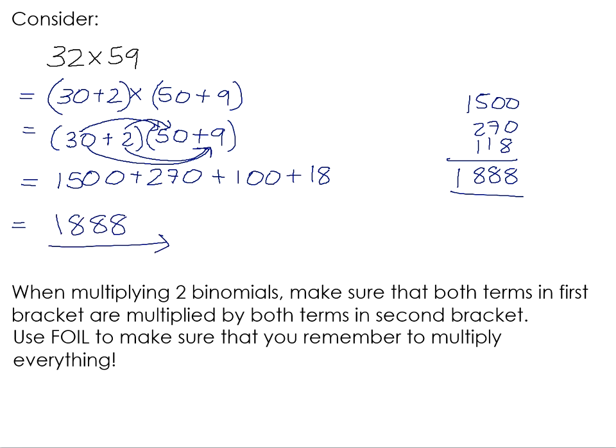If you'd like, you can pause the video here and write down the rule that I've written down here. When you multiply two binomials, make sure that both the terms in the first bracket are multiplied by both the terms in the second bracket. And in order to help us remember this, you might have learned this word FOIL. FOIL is just a little acronym that helps you to remember to multiply everything by everything else.